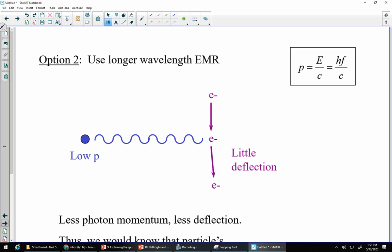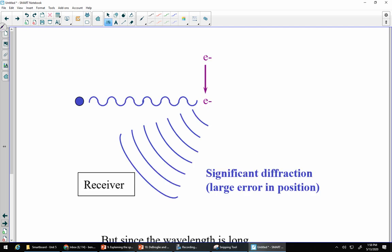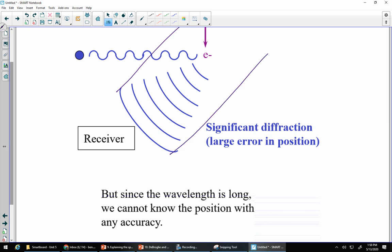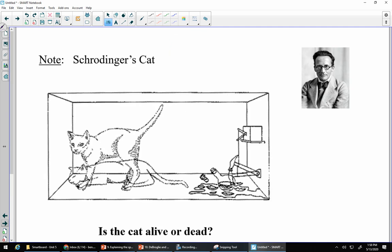The second option is to use longer wavelength EMR. Longer wavelength means lower momentum. Lower momentum is nice because there's going to be very little deflection, so it's going to continue essentially along the same path. We can now have information about its path, about its momentum. The problem is the longer the wavelength, the more diffraction we have. So the more diffraction we have, the less likely it is that we know where that electron was at a particular point in time. So again, we can either know where it was or we can know where it's going, but we cannot know both.